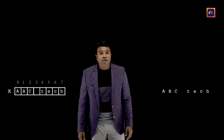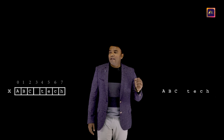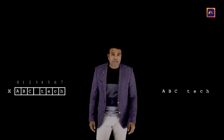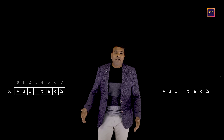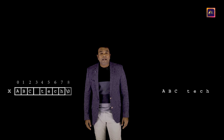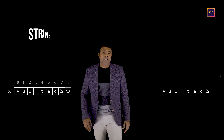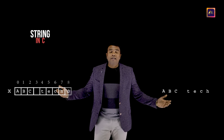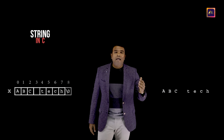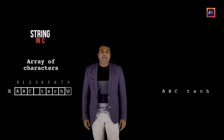Just that a programming language like C expects the string to end with a null character. So if I append a null character, then certainly I can call it a string. And now, certainly this is a string in C language. So what is a string in C language? A string in C language is nothing but an array of characters ending with a null character.